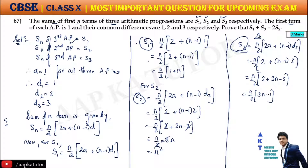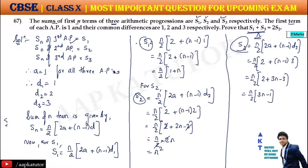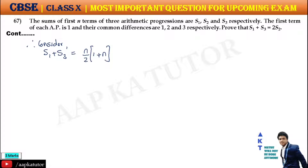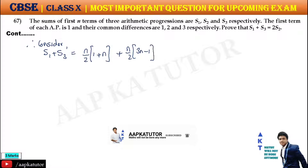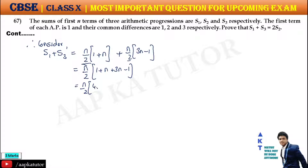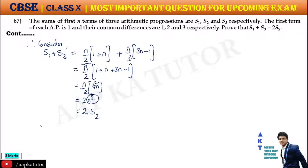Now we will compute S1 + S3. S1 = n/2 · (1 + n) and S3 = n/2 · (3n − 1). Taking n/2 common: S1 + S3 = n/2 · (1 + n + 3n − 1) = n/2 · 4n = 2n². Since S2 = n², this equals 2·S2. Therefore, S1 + S3 = 2S2. This is your final answer.